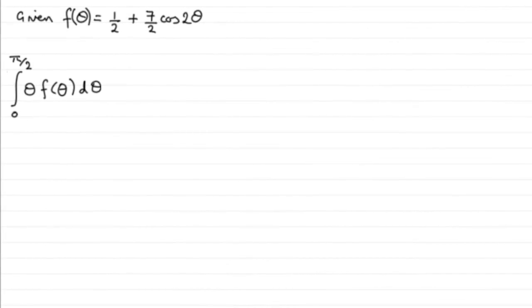Okay, so for this question, what we've got to do is integrate from 0 to pi upon 2 theta f of theta with respect to theta. And in the previous part we were told that f of theta equals half plus 7 over 2 cos 2 theta.